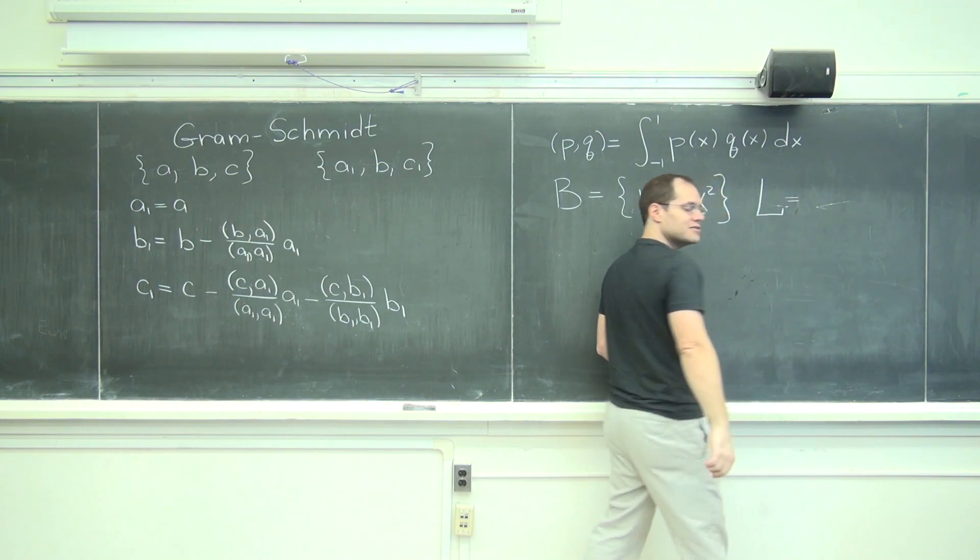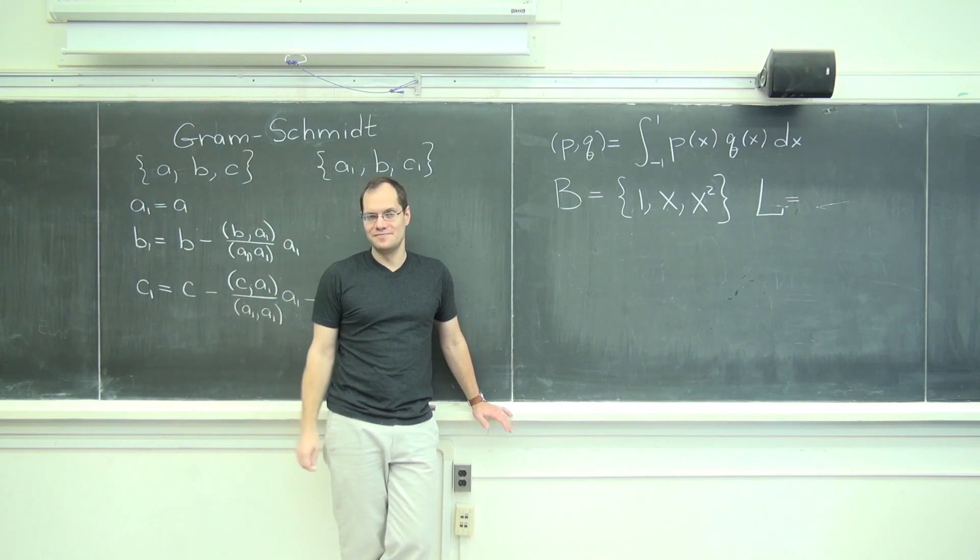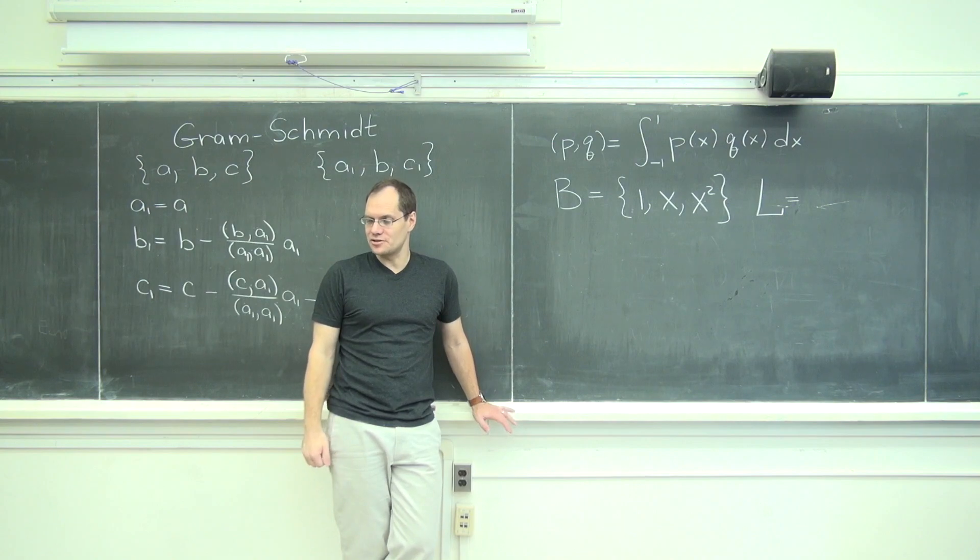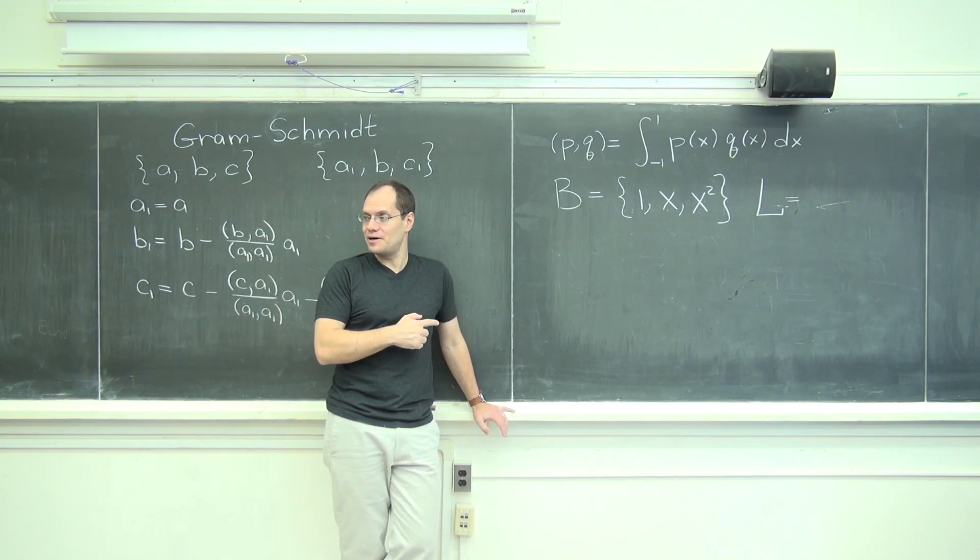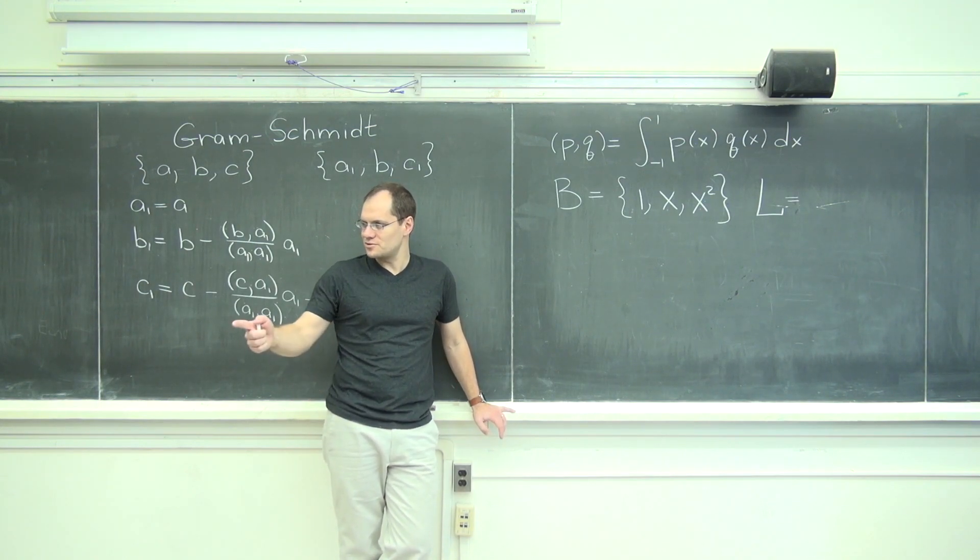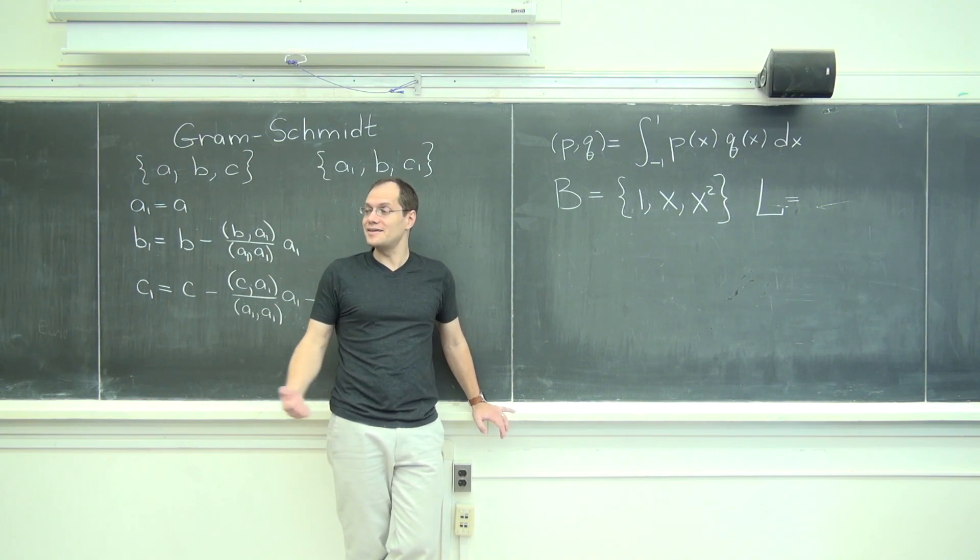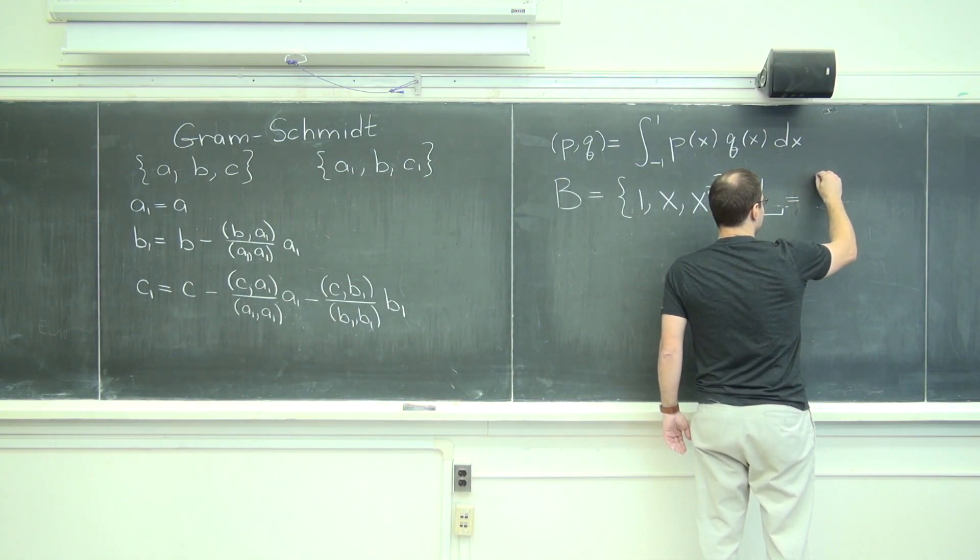And why are Legendre polynomials special? Because they're orthogonal. That's more fundamental to your Gaussian quadrature claim. Because Gaussian quadrature is related to Legendre polynomials because they're orthogonal. That's why. Because they're orthogonal. That's what makes them special. Okay. We'll start building them.